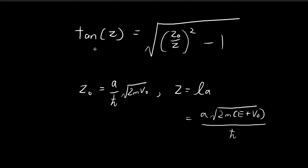Before we move on to the scattering states, I want to say a few more words about this particular equation that we obtained. Last time we found that in order to find the energy levels allowed under the finite square well for the bound states, we need to solve this equation. Solving this, we find the value of Z where the equation is satisfied, then use those values of Z to deduce the value of L, which allows us to deduce the energy level E. But you can see it is impossible to obtain a closed-form solution for this equation.